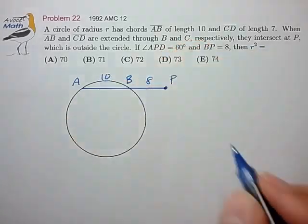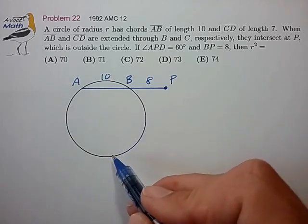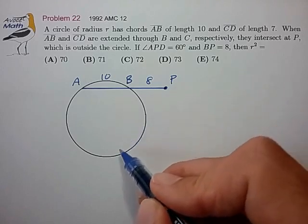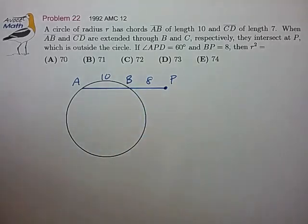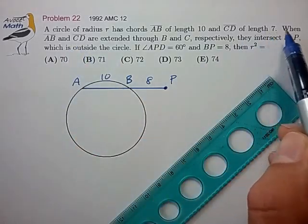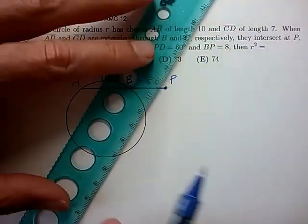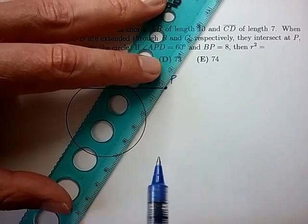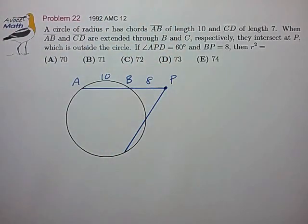AB is 10, and it looks like we're trying to create another chord CD that also intersects at point P to form a 60 degree angle with the first chord. So let's try to draw that in. We're also trying to have the second chord be roughly of length 7, so let's see if we can incorporate that as well. So to my eye this would create a secant chord roughly as shown.